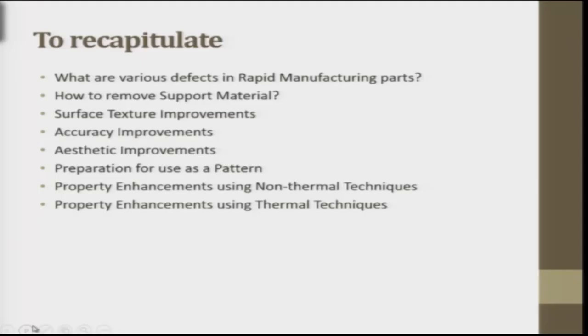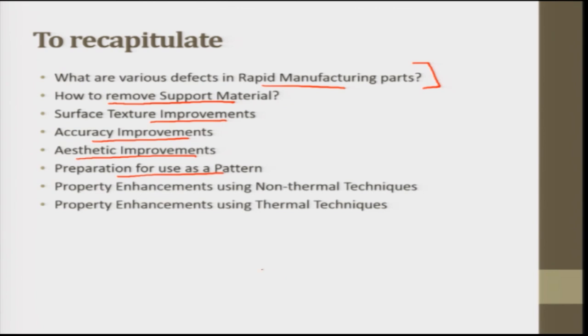With this, the major post-processing concerns in rapid manufactured parts have been discussed: support material removal, surface texture improvement, accuracy improvements, aesthetic improvements, preparation of parts as patterns, and property enhancement using non-thermal and thermal techniques. Some researchers also include metrological inspection and testing — quality testing, inspection — as a post-processing concern.